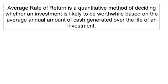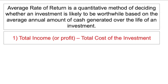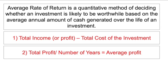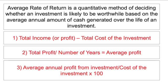Average rate of return is a quantitative method of deciding whether an investment is likely to be worthwhile — should we carry out this investment, or if we have options, which one should we choose? It's based on the average annual amount of cash generated over the life of an investment. There are three steps: step one, step two, step three.